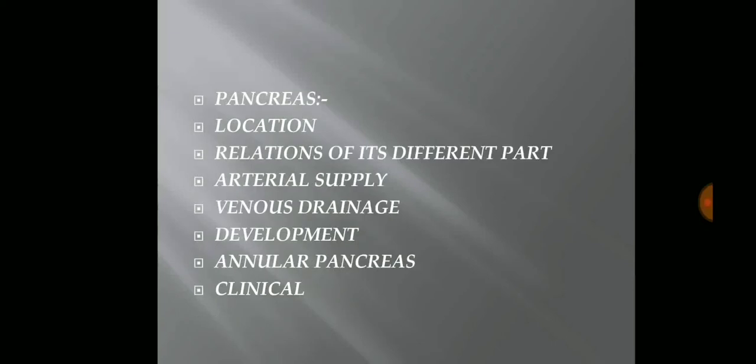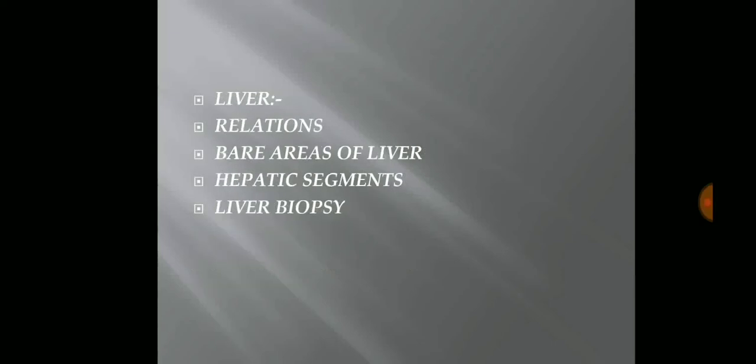In case of the pancreas, both a short note and a long question can be asked. If either is asked, you have to write about: location, relations of its different parts, arterial supply, venous drainage, annular pancreas — this is the most important one and you can absolutely expect it — and clinical anatomy. Moving on to the liver, you have to write about: relations, bare areas of the liver, hepatic segments, and liver biopsy. The generally asked questions are bare areas of the liver and its relations, and these two questions are also asked during the vivas in the practical examination.